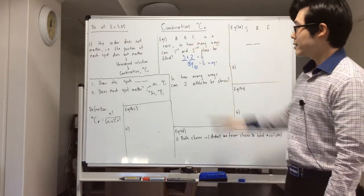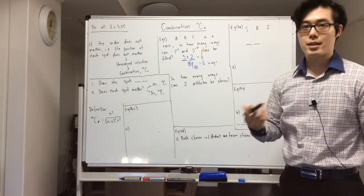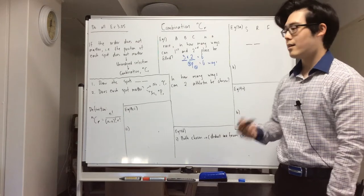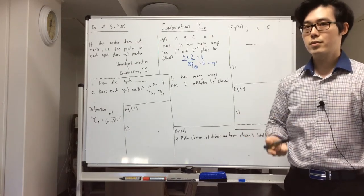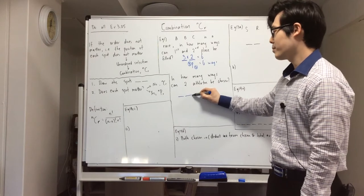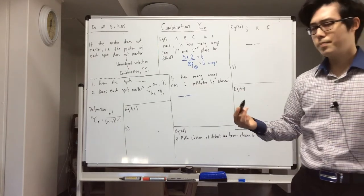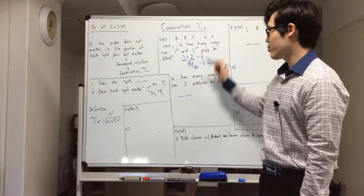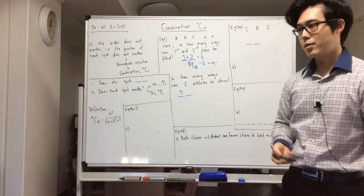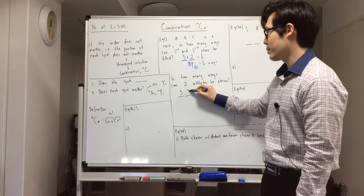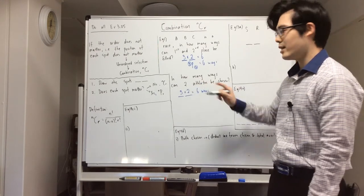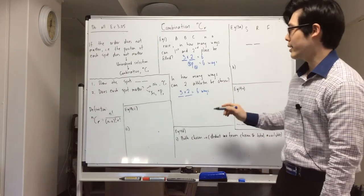Now let's have a look at the difference between this problem and this one. Same people A, B, C — but the question is: in how many ways can two athletes be chosen from the three people? I still have two spots and three people, so any of the three can be chosen, and then any of the two for the second athlete. You would think it's still six ways, but it's actually not quite six ways.